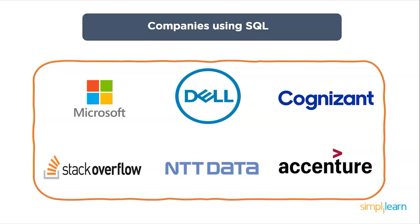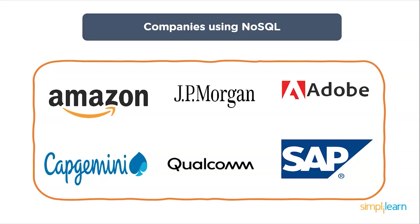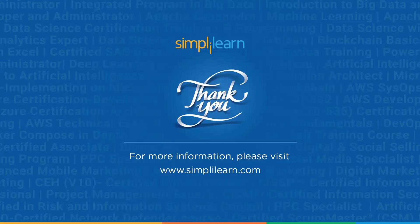Some big companies using SQL include Microsoft, Dell, Cognizant, Stack Overflow, Nvidia, and Accenture. Companies using NoSQL include Amazon, JP Morgan, Adobe, Capgemini, Qualcomm, and SAP. With that we have come to the end of this session. I hope it was interesting and informative. If you liked it, please let us know in the comment section, subscribe to our channel, and stay tuned for more from SimplyLearn.